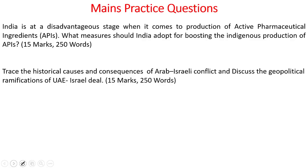Now let's look into the main practice questions. One — India is at a disadvantageous state when it comes to the production of active pharmaceutical ingredients. What measures should India adopt for boosting the indigenous production of APIs? Two — Trace the historical causes and consequences of the Arab-Israeli conflict and discuss the geopolitical ramifications of the UAE-Israel deal. Please write all your answers in the comment section for peer review and constructive criticism. In case you have liked our initiative, please do like and subscribe to our YouTube channel. This is it for today. Thank you for watching. All the best.